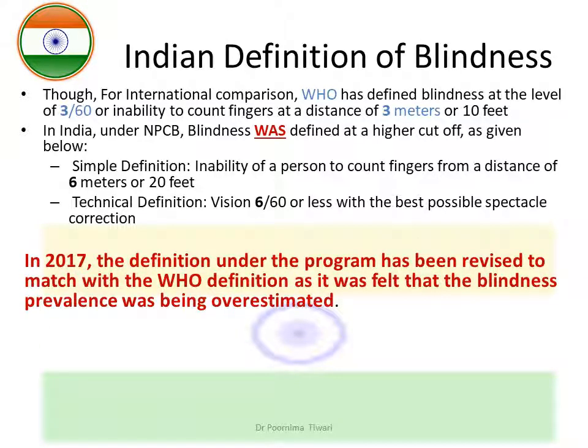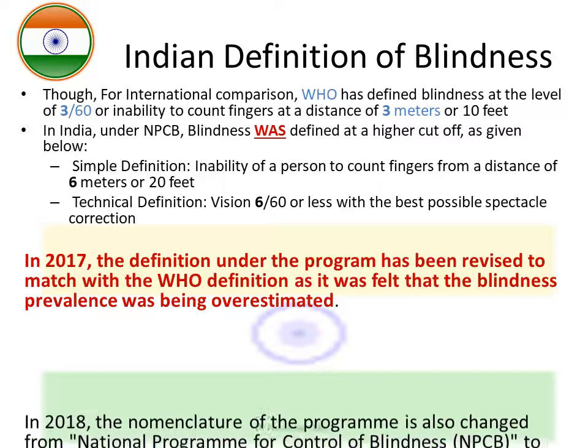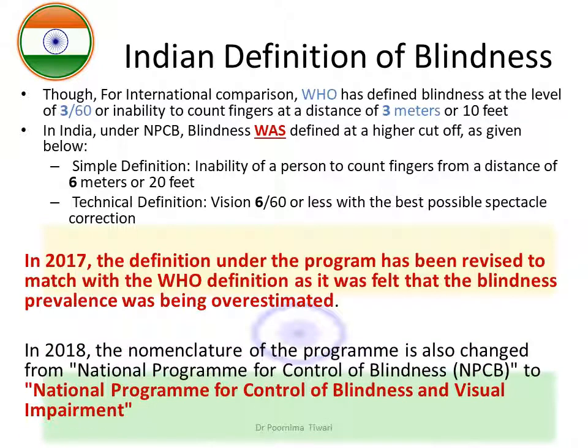In 2017, the definition under the program was revised to align with the WHO definition, because it was felt that blindness prevalence was being overestimated and program evaluation was becoming disheartening as a result. Further, in 2018, the nomenclature of the program was also changed from National Programme for Control of Blindness to National Programme for Control of Blindness and Visual Impairment.